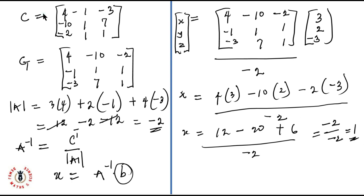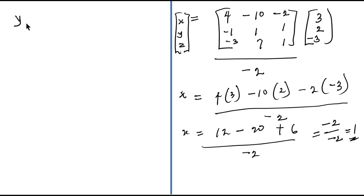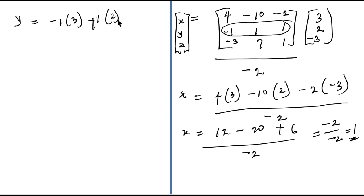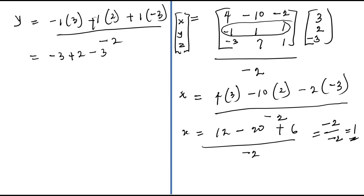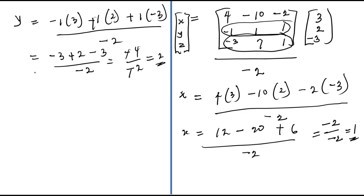To solve for y, I pick the second row of the adjoint and multiply by vector B: minus one times three is minus three, plus one times two is plus two, and plus one times minus three is minus three, all over minus two. That's minus three plus two minus three equals minus four, over minus two, which equals two. So y equals two.